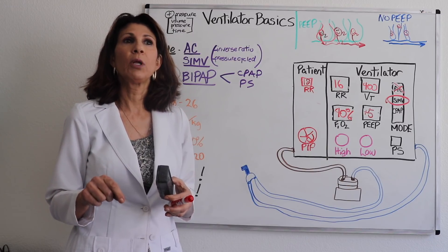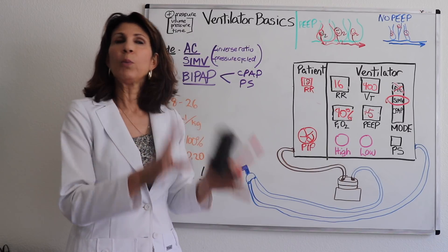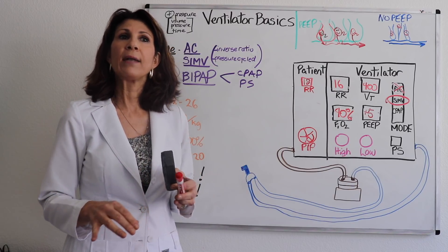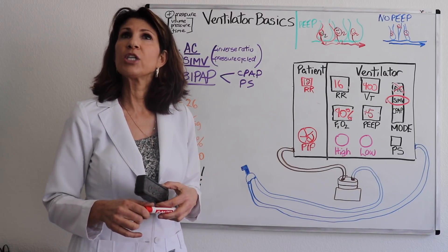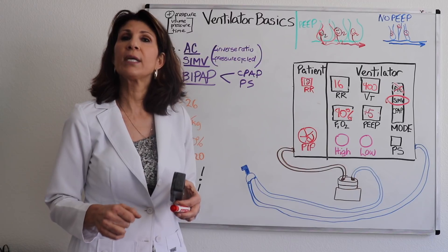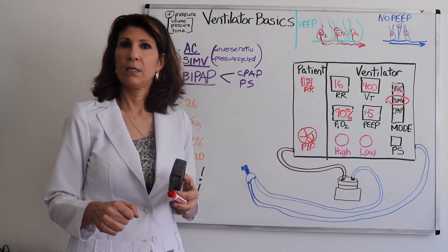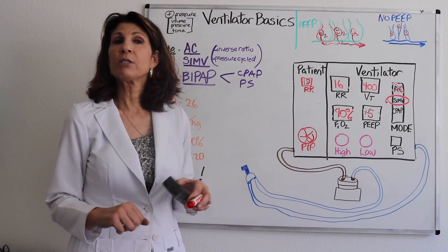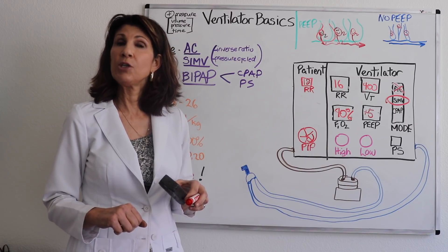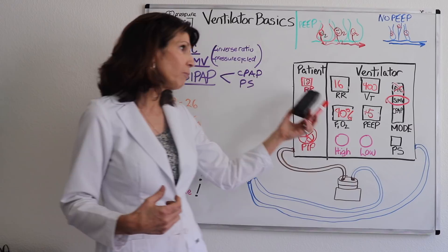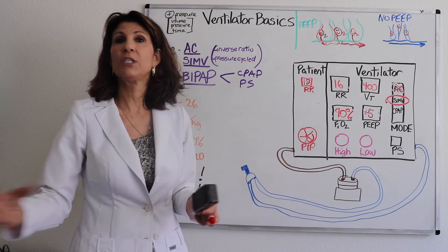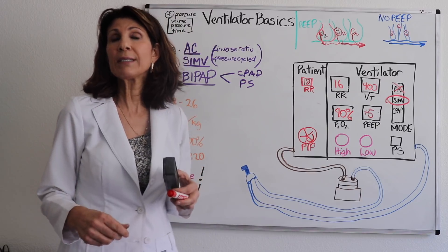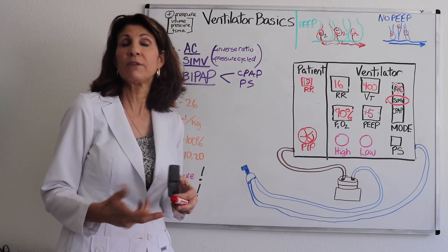So let's give a reverse example. Let's say that with a given number of settings the pH came back 7.26 and the CO2 is 50, all else is unchanged. That's a respiratory acidosis. And you need to increase the number of breaths delivered. It's not sufficient to normalize your respiratory system's ventilation.